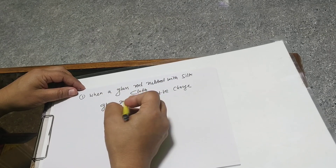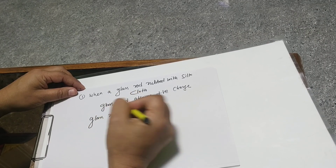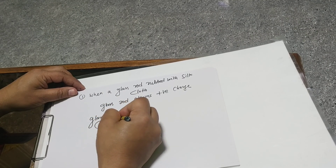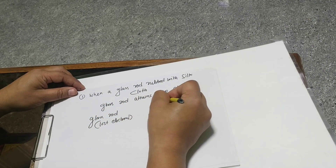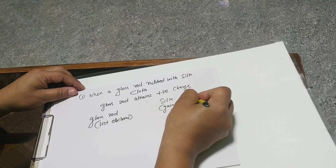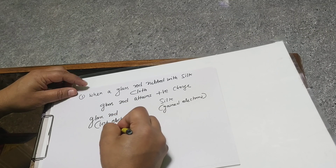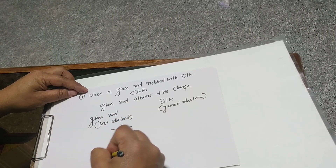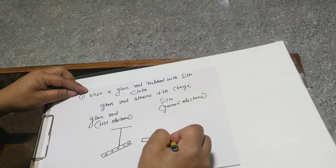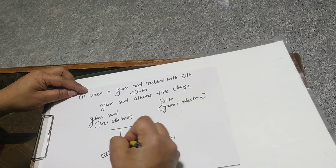What does it mean? It means the glass rod has lost electrons, and the silk has gained electrons. Now, if you bring one glass rod in front of another glass rod, you will see a very interesting thing — there is a sudden repulsion.